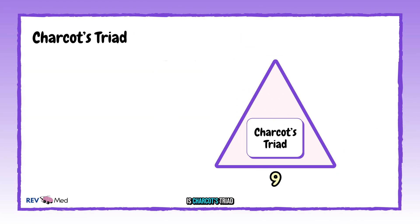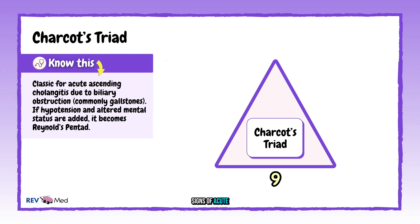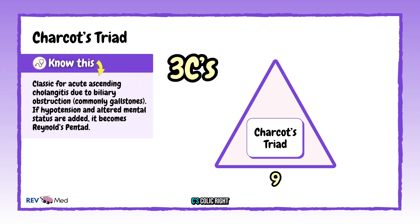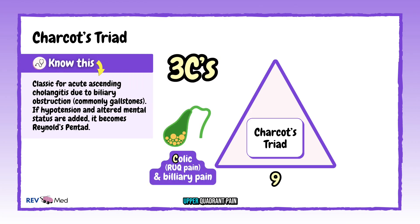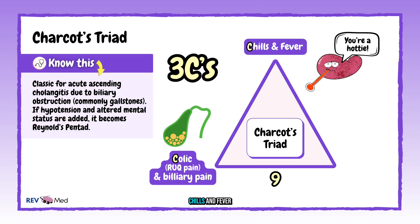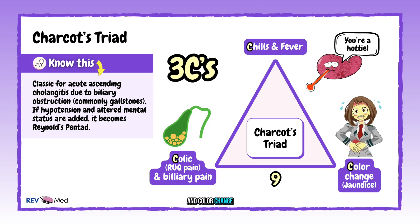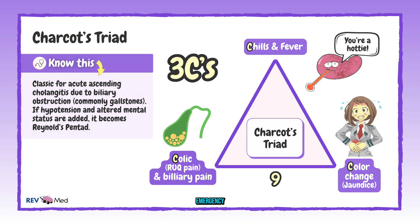Number nine: Charcot's triad — signs of acute cholangitis. Think the three C's: colic right upper quadrant pain, chills and fever, and color change for jaundice. If the patient also has hypotension and altered mental status, that's Reynolds' pentad — a medical emergency.